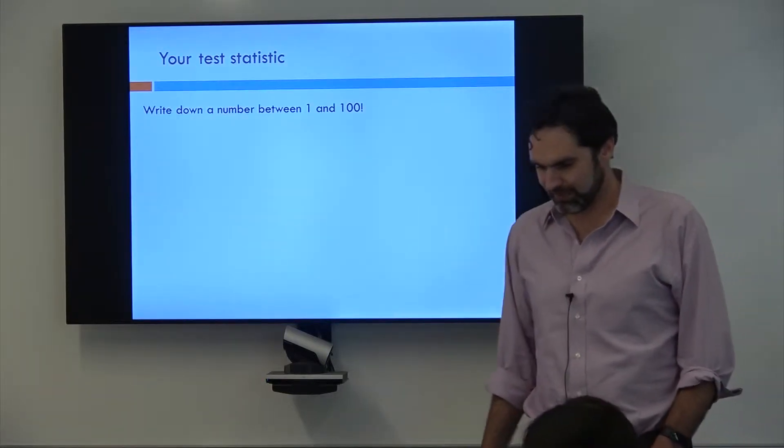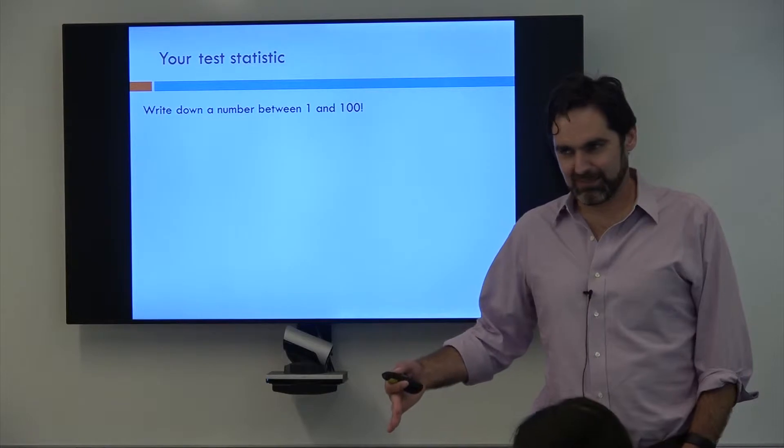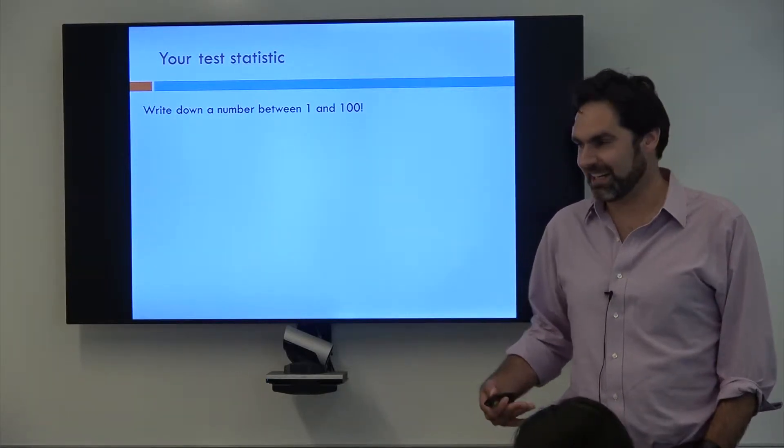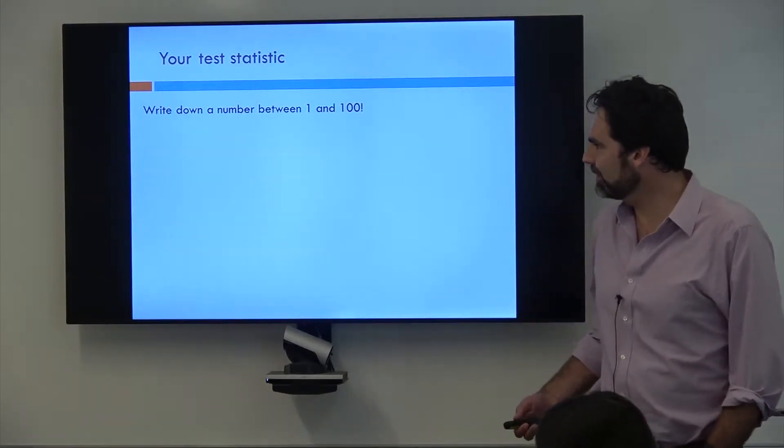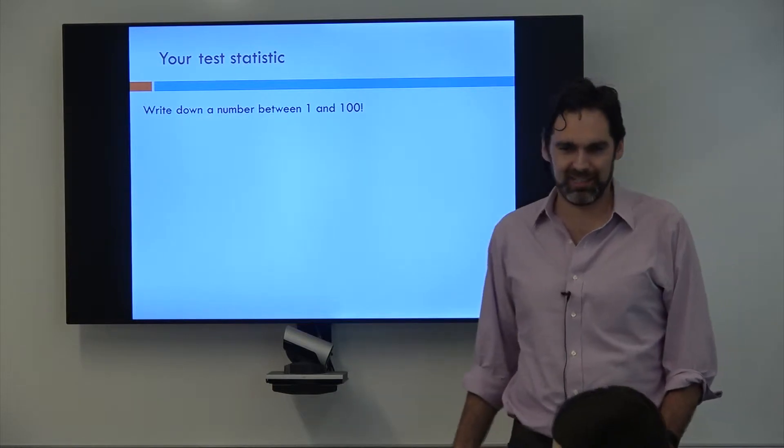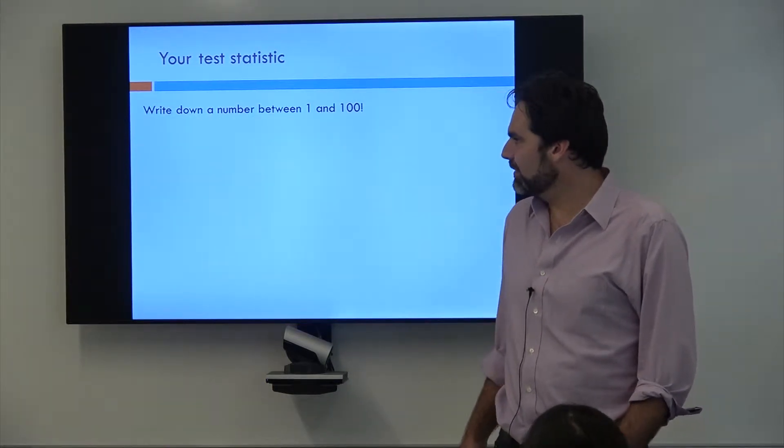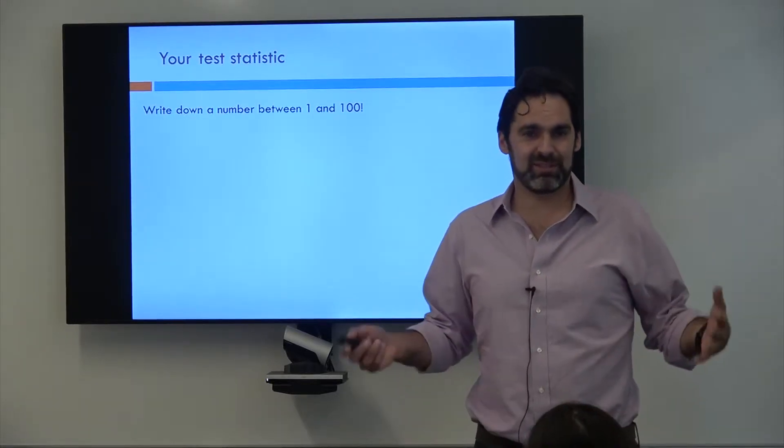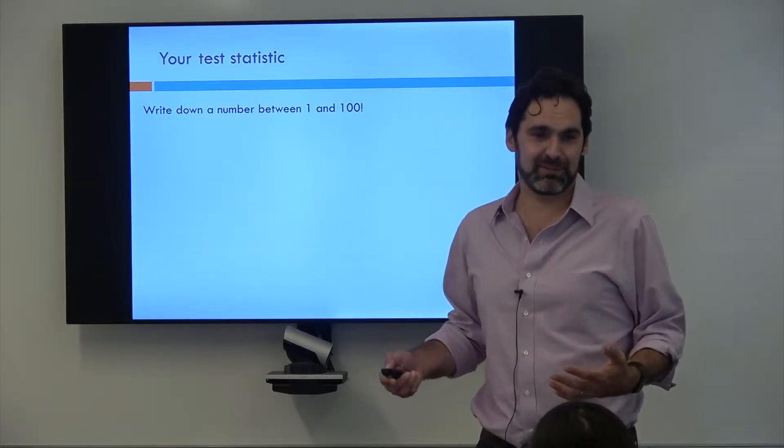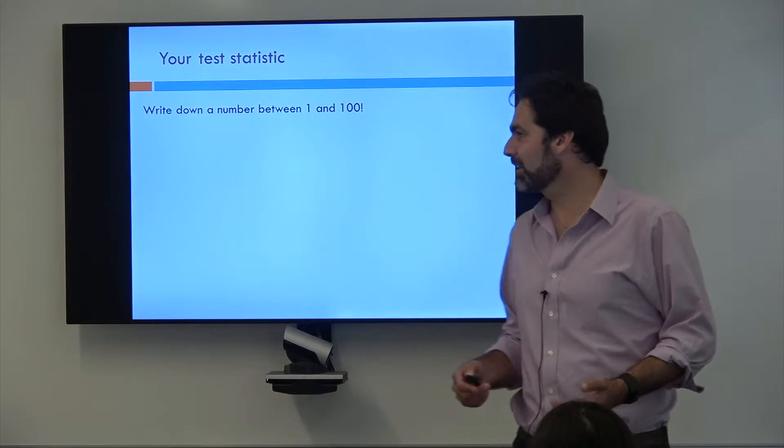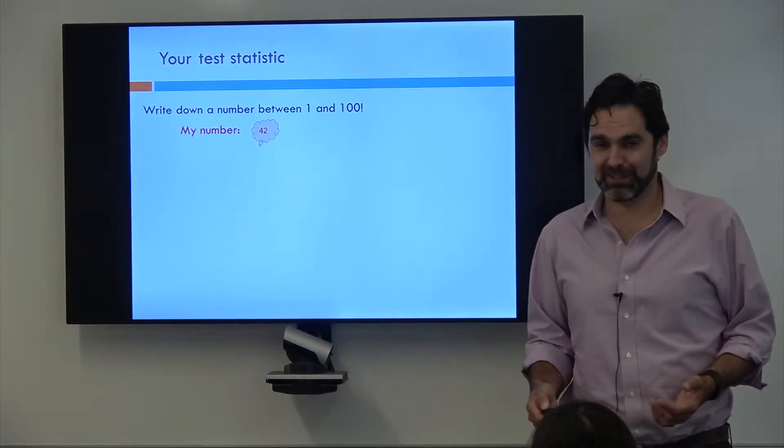All right, so we're going to build our way into p-values and this is going to be a little bit interactive. So the first thing you need to do is write down a number between 1 and 100. And this number is drawn from the distribution of whatever numbers are between 1 and 100 when people write them down randomly. I wrote down 42.